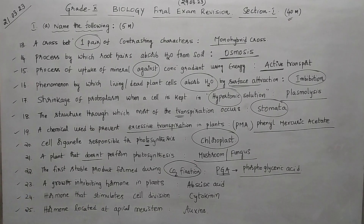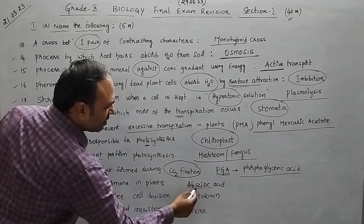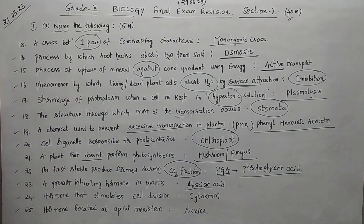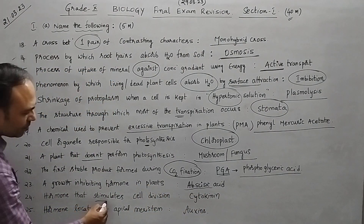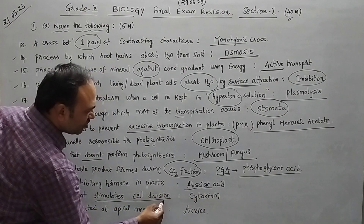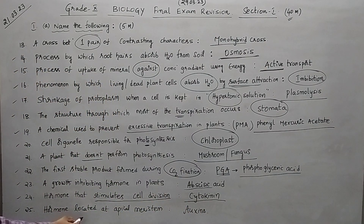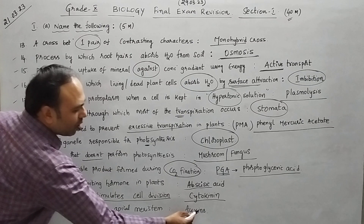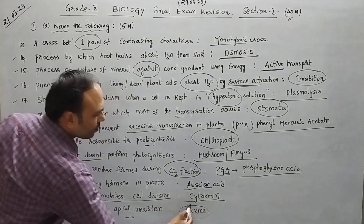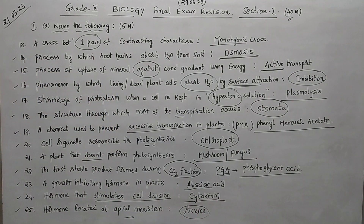Questions 23, 24, and 25 are about hormones. A growth-inhibiting hormone is abscisic acid. The hormone which stimulates cell division is cytokinin. The hormone which is located at the apical meristem is auxin. Make a note of this — these are the first 25 important questions.